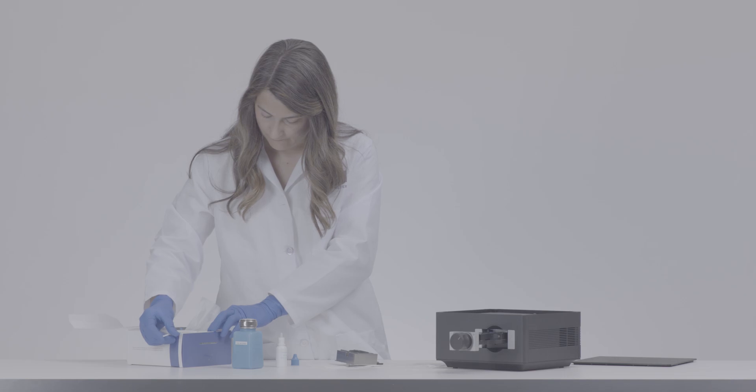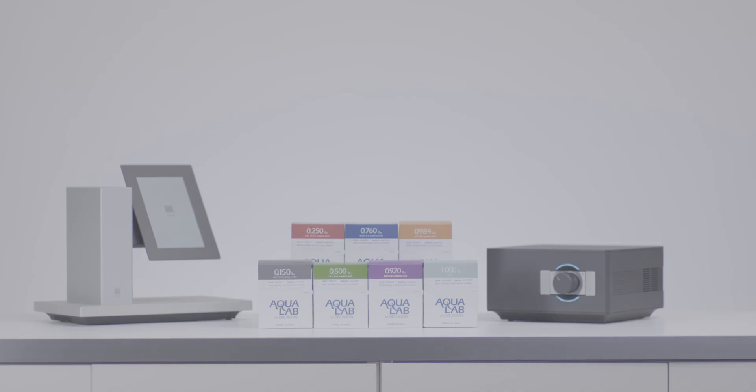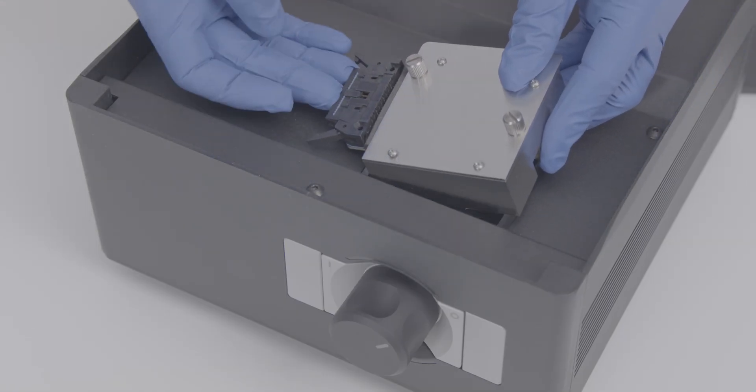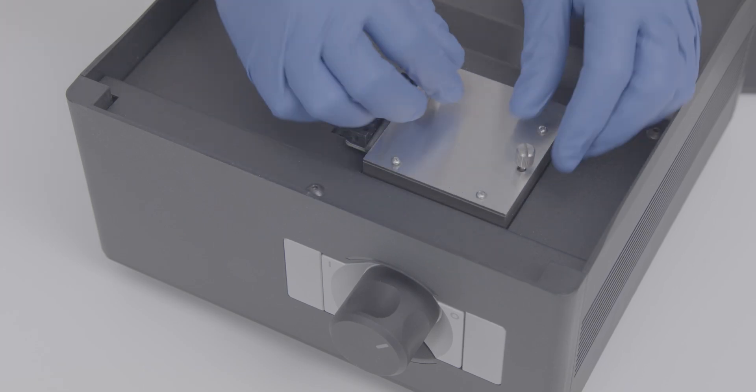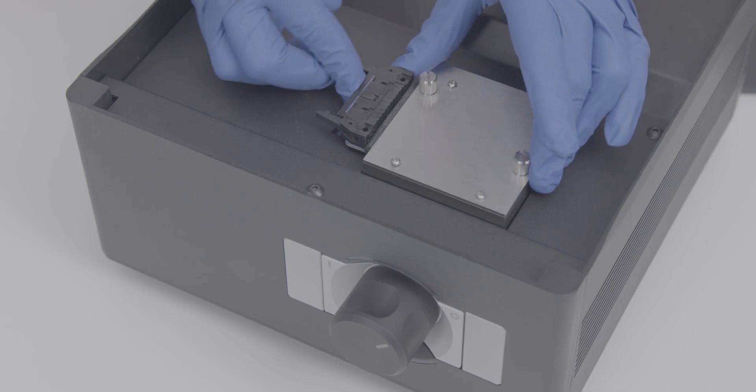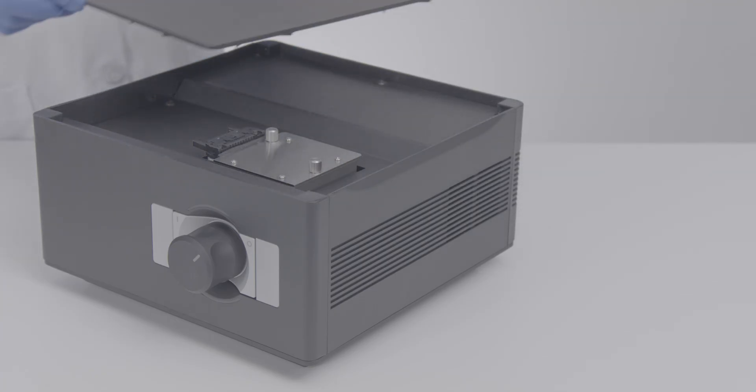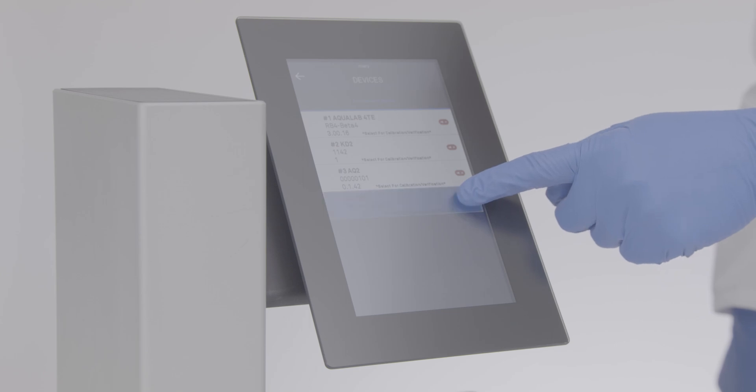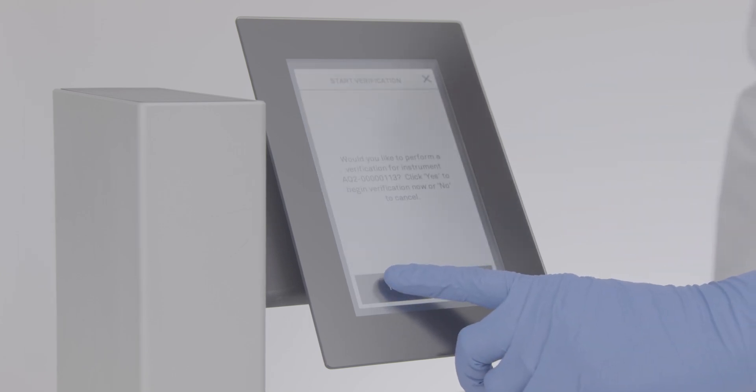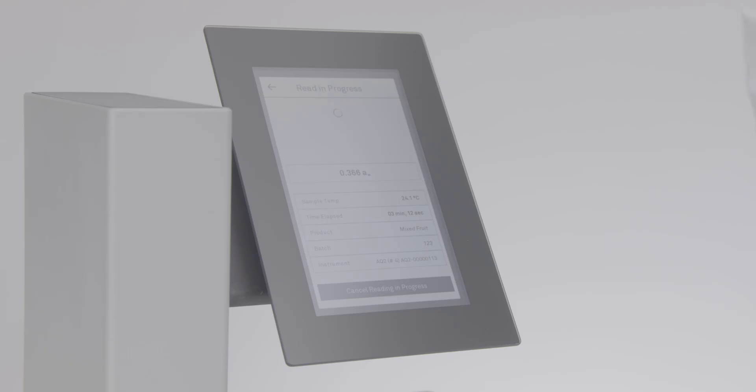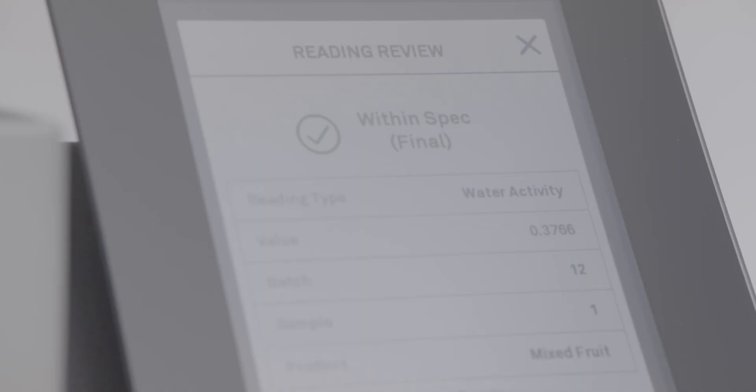Once the cleaning process is complete, let the sample chamber dry for about five minutes while you prepare your water activity standards for verification. Once the chamber is dry, replace the sensor block. Plug in the ribbon cable and make sure it is fully seated. Tighten the thumb screws. Replace the cover. Plug in the power and USB cables and turn the instrument on. Scala will guide you in repeating the verification process. When your instrument reads in spec, you have finished cleaning your instrument.